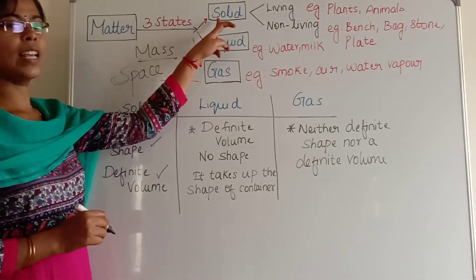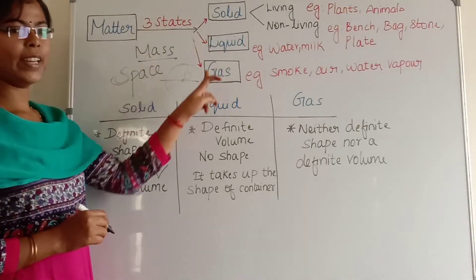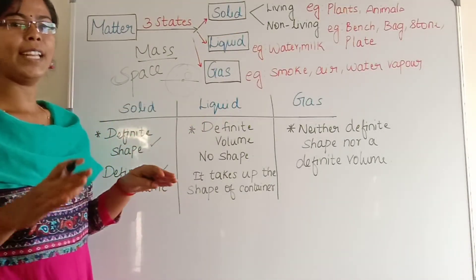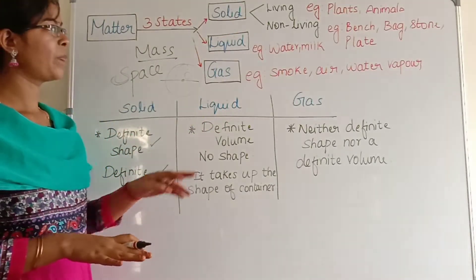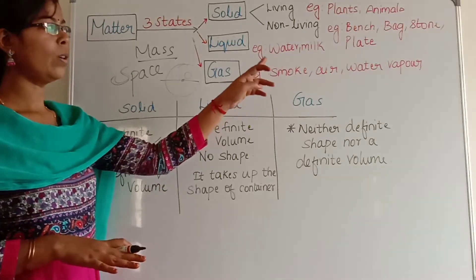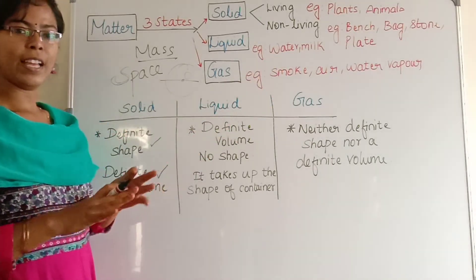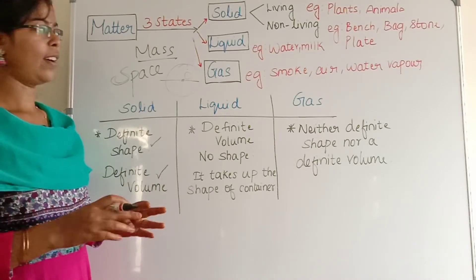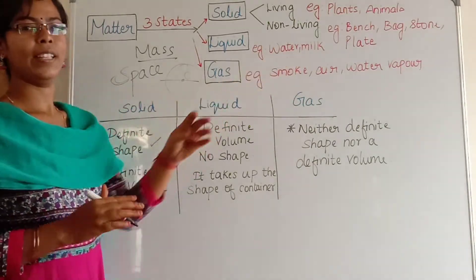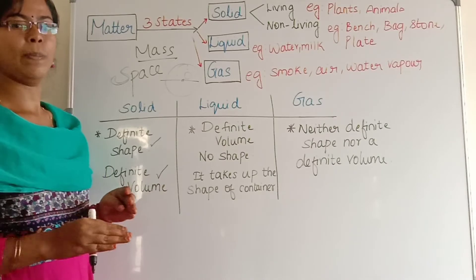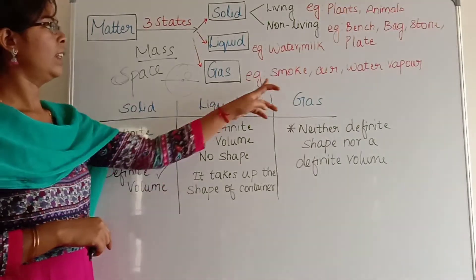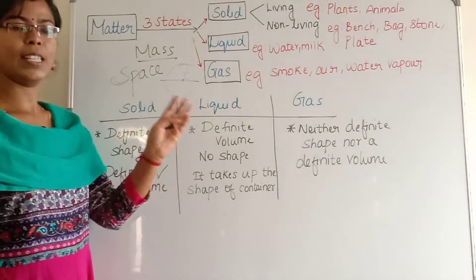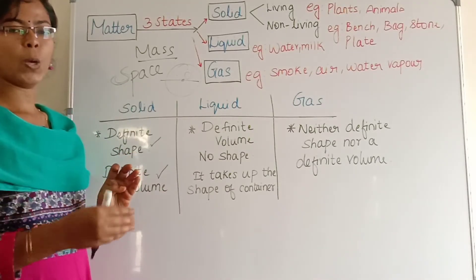Matter has three states: solid, liquid, and gas. For example, plants and animals are on land — they take up some space on land. Bench, bag, stone, plate — everything takes up the space where they are. Water and milk, when they are in a container, take up space in that container. Smoke, air, water vapor — when in a room, they take up some space in the room.